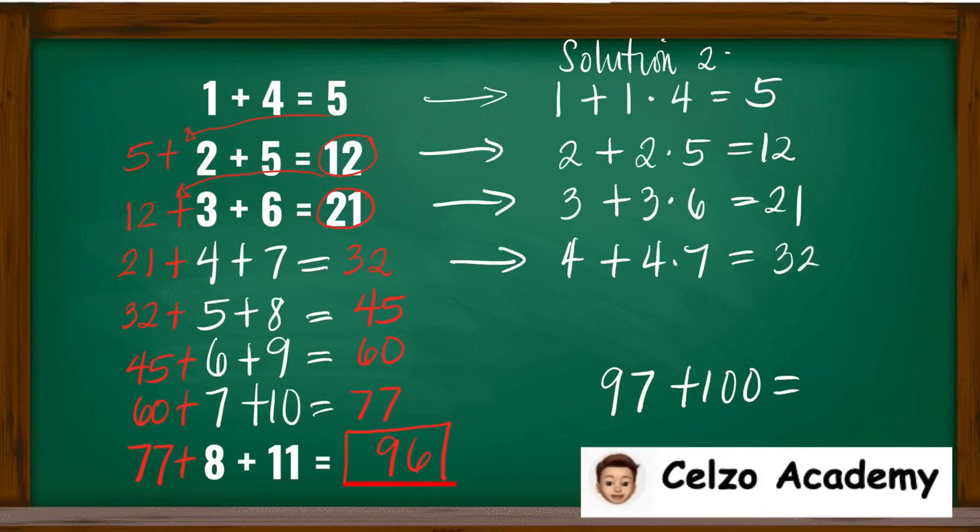So for line 5, 5 plus 5 times 8, that's 45. 6 plus 6 times 9 is 60. 7 plus 7 times 10 is 77. And for 8 plus 11, this means that you will have 8 plus 8 times 11, which is also 96, which is correct.